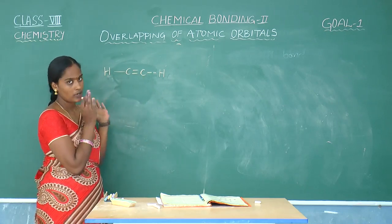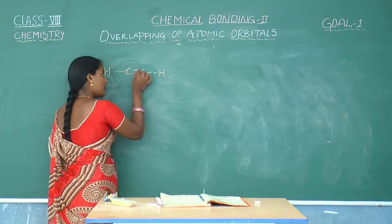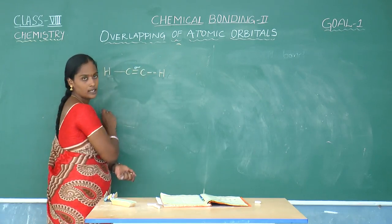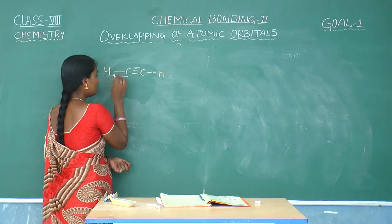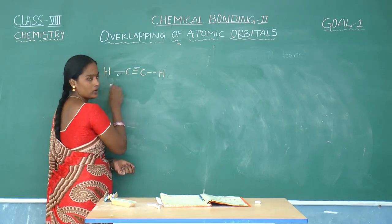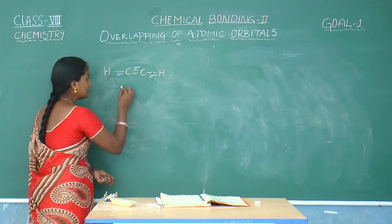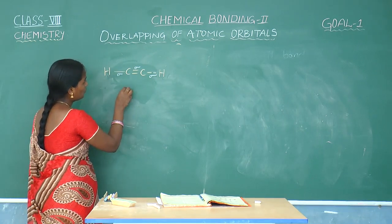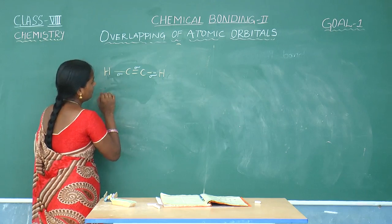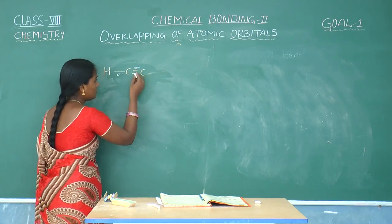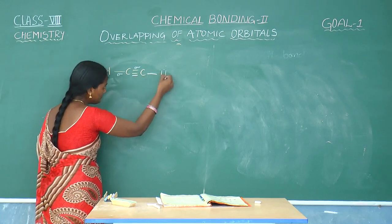This is a covalent bond now, right? First bond formed between any two atoms is a sigma bond. Between two atoms first bond is sigma bond. In this C2, this is not balanced. If you consider this one, this is balanced.